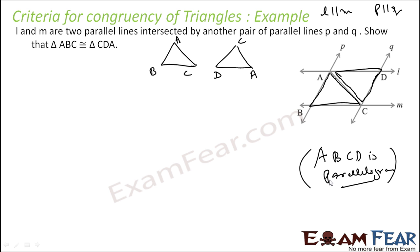Since they form a parallelogram, I can say that AB is equal to DC — sides of a parallelogram. BC is equal to AD — sides of a parallelogram. And angle B is equal to angle D — opposite angles of a parallelogram. Thus we can see side-angle-side, and we can prove it.